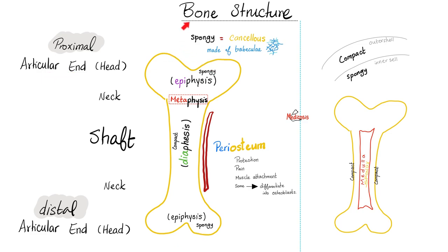The ends articulate with the next bone in line to form a joint. In the core of your bone there is the medulla — spongy, soft — which contains bone marrow to make blood cells, including red blood cells, white blood cells, and platelets. For the bone as a whole, the outer shell is compact bone and the inner shell is spongy, cancellous bone.